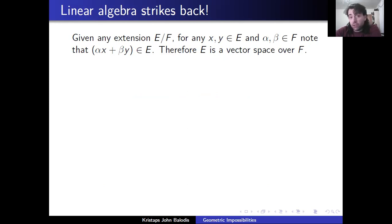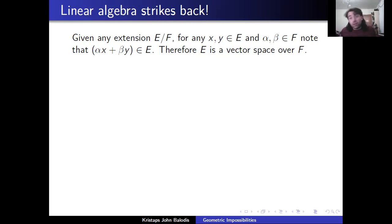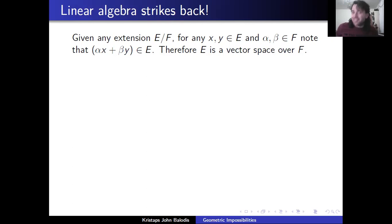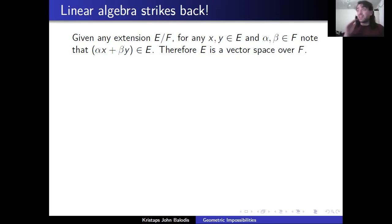So if we have an extension field E of a field F, for any x and y in E and any alpha and beta in F, we can scale or multiply and then add — in other words, we can take linear combinations of elements. What does that mean? That means E is a vector space over the field F. If you go back and crack open your linear algebra textbook and look at the definition of vector spaces — eigenspaces, matrices, and so on — this works for any field, it doesn't just have to be the real numbers. Basically all the things you already know about linear algebra transfer over here.